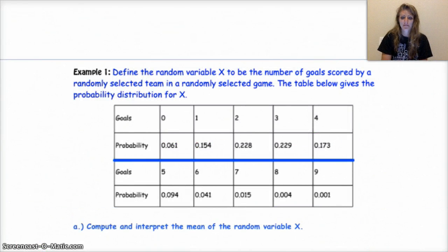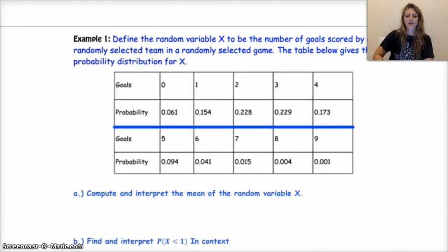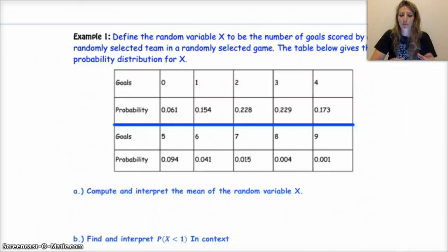Example one, and there's only one example. So go ahead, try it. We have, we're defining the random variable x to be the number of goals scored by a randomly selected team of a randomly selected game. And so the table below shows the probability distribution for x. This just means that the probability of getting no goals is 0.061. The probability of that team getting one goal is 0.154, and so on. So go ahead, compute and interpret the mean of the random variable x. And then the second question says find and interpret the probability that x is less than 1 in context.